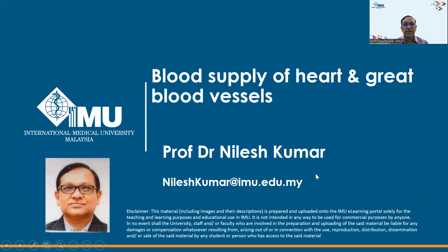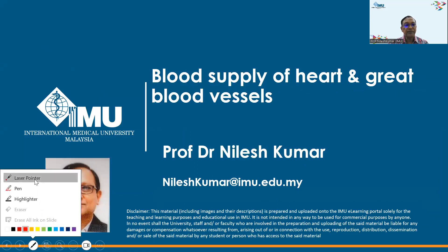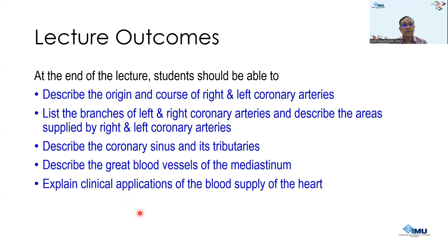Good morning. Today's lecture is Blood Supply of the Heart and Great Blood Vessels. The learning outcomes are: describe the origin and course of right and left coronary arteries — meaning we need to understand from where they arise and how they course over the surface of the heart, what branches they give, and what areas of the heart are supplied by each. Particularly for your end of PP1 assessment, we always ask which part of the heart is supplied by the right and left coronary arteries.